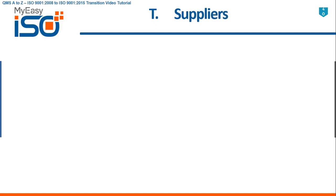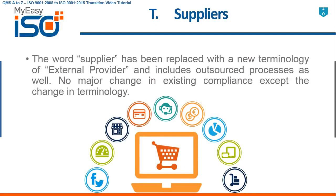T — Suppliers. The term 'supplier' has been replaced with the new terminology of 'external provider,' and now includes outsourced processes as well. No major change in existing compliance except the change in terminology. Any outsourced services are also covered under this compliance, covering external provider selection, initial evaluation, approval, control, communication, and re-evaluation.